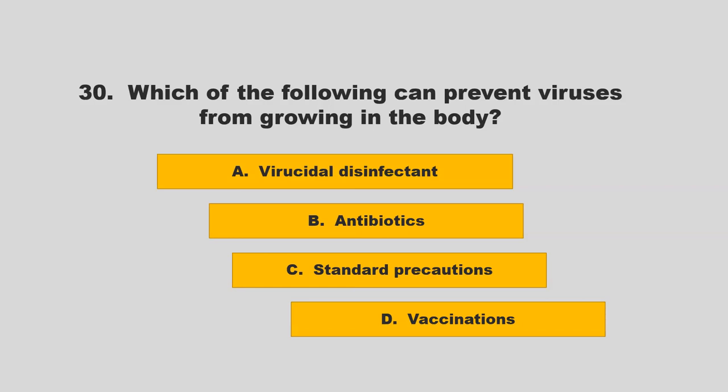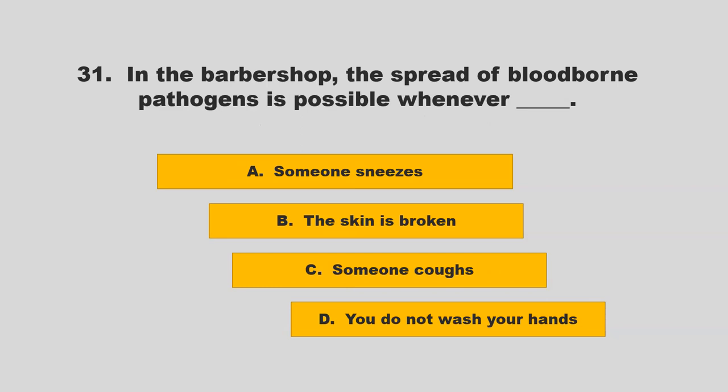Which of the following can prevent viruses from growing in the body? Options: virucidal disinfectant, antibiotics, standard precautions, or vaccinations. The correct answer is D: vaccinations.